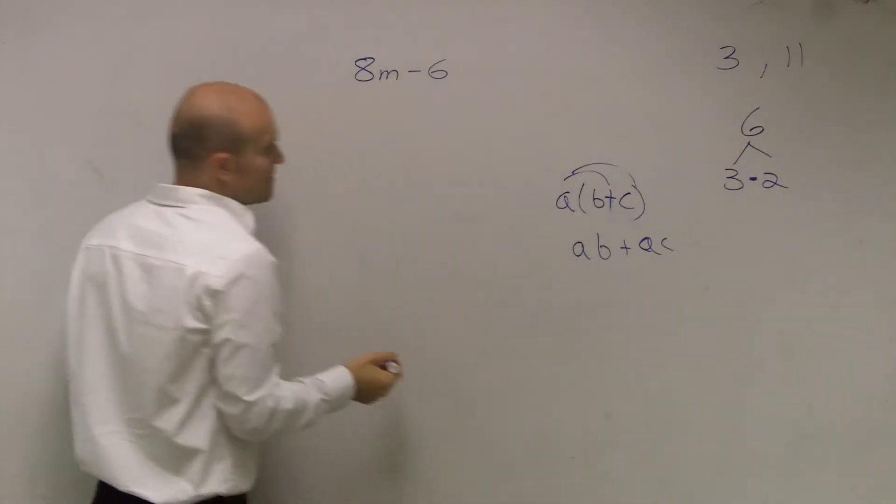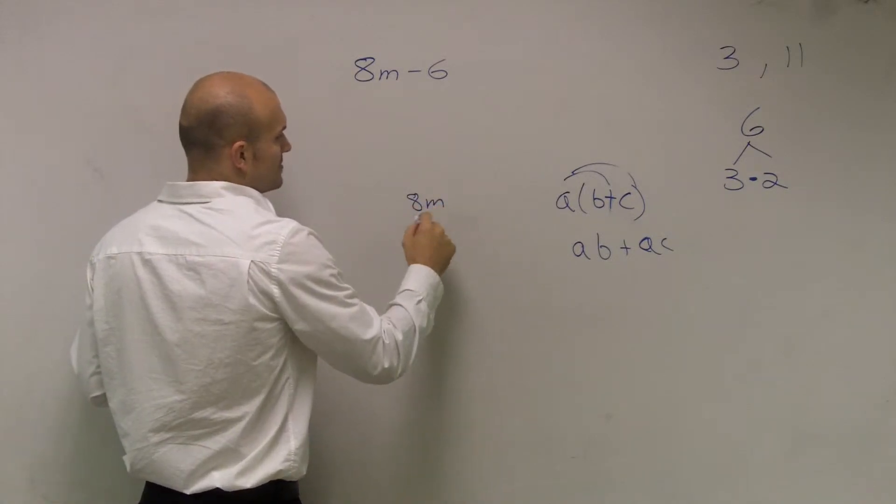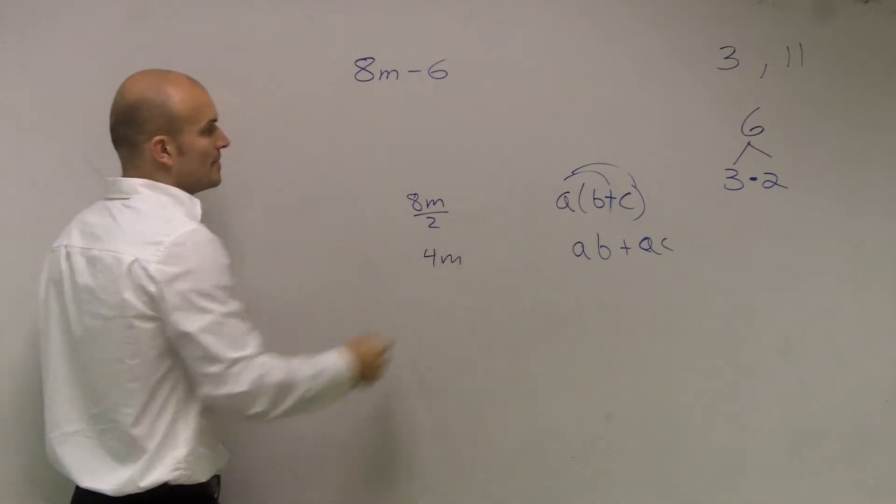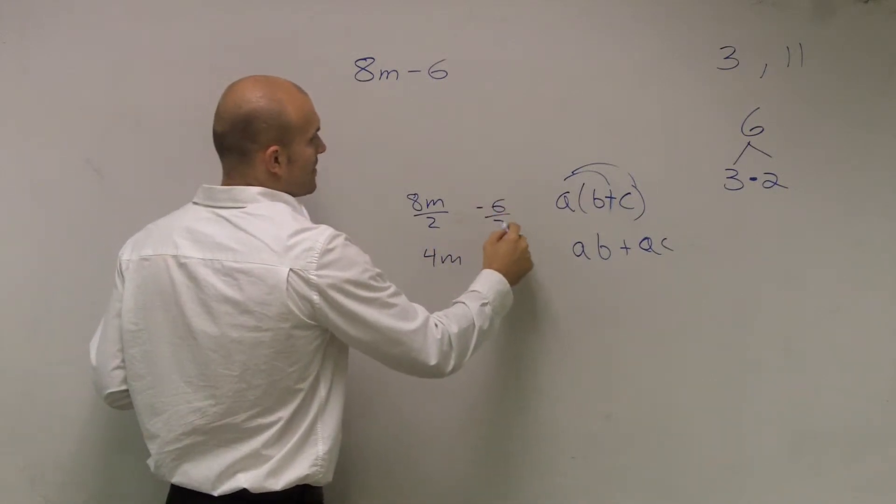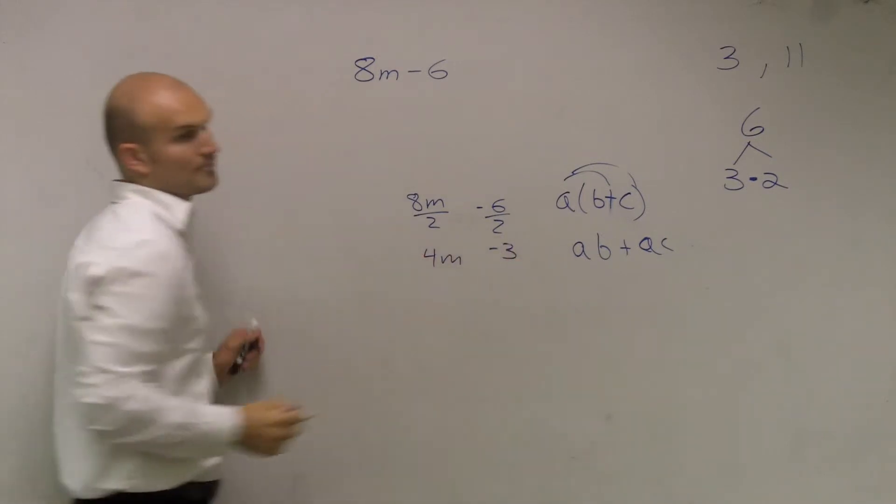And pretty much what I mean by dividing in, can you do 8m divided by 2? Does 2 divide into 8m? Yes, it does. That makes 4m. And can you do negative 6 divided by 2? Yes. That equals negative 3.